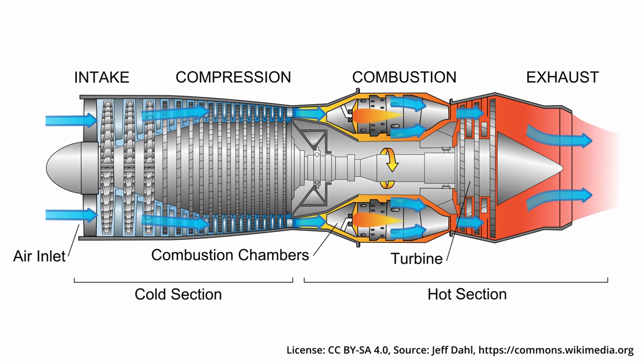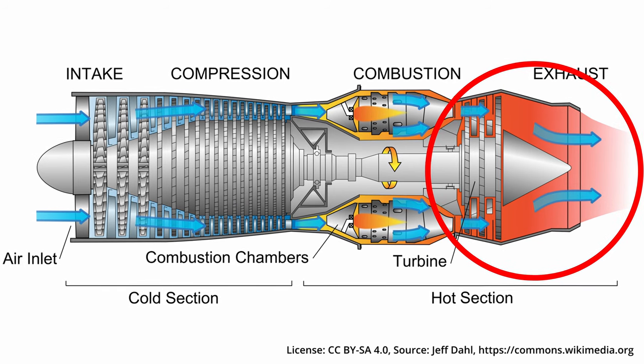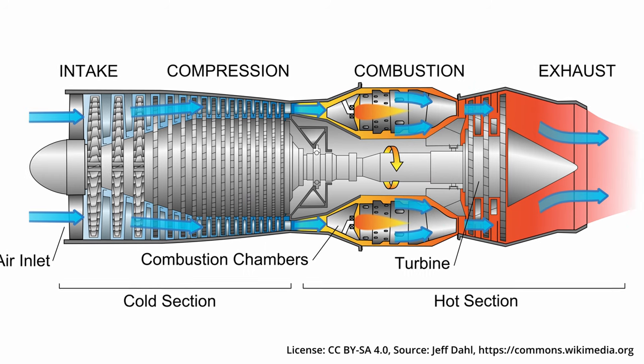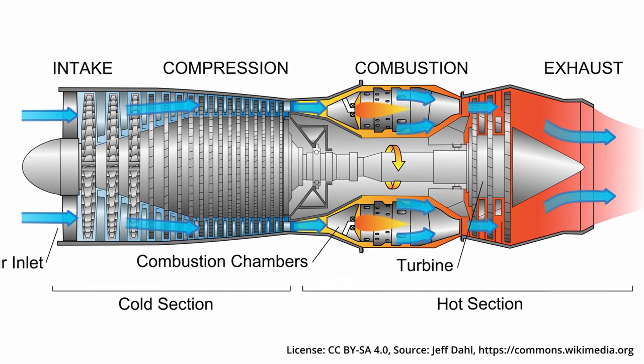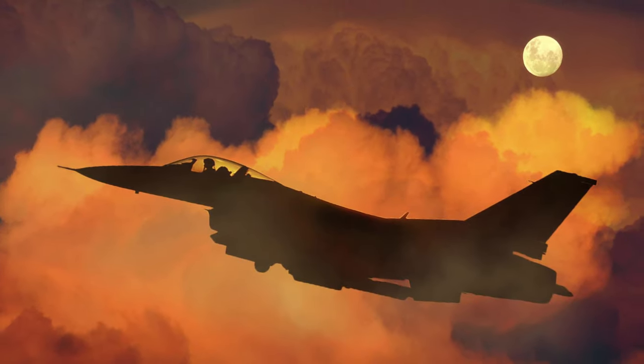In a fighter jet, almost all the thrust is generated by the hot, expanding exhaust gases ejected through a nozzle. This is known as a turbojet engine. This design consumes more fuel than a turbofan engine, but allows higher speeds due to the faster gas flow generated by such an engine.